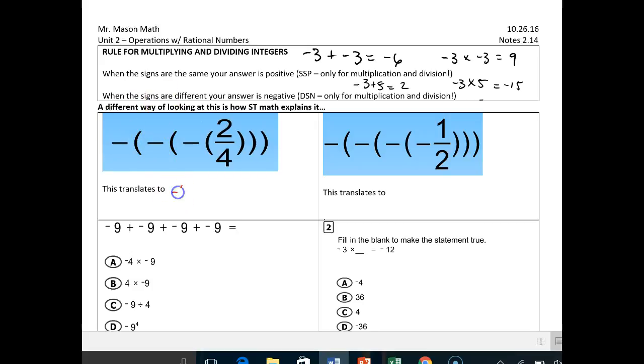Basically this translates to negative 2 fourths. But the reason why it's negative 2 fourths is if you have an odd number of negatives, your answer is negative. So if I had 1, if I had 3, if I had 5, if I had 7, all those odd numbers, my answer would be negative.